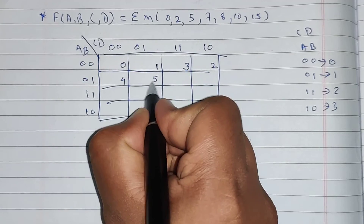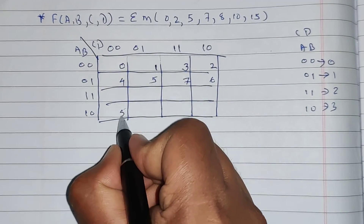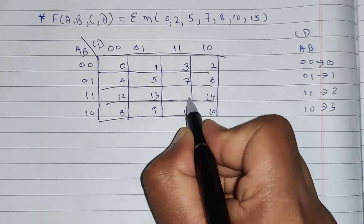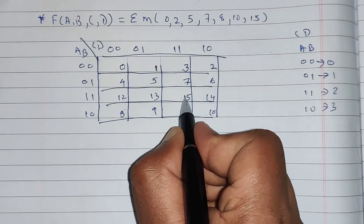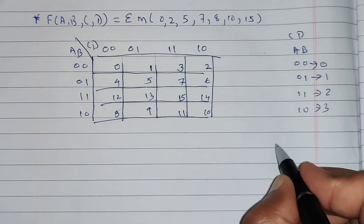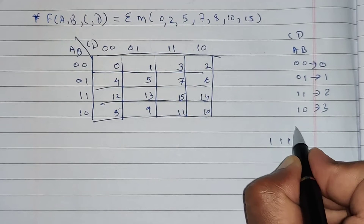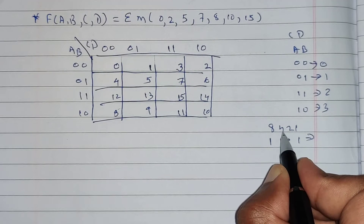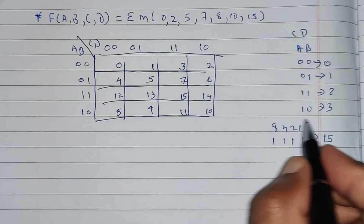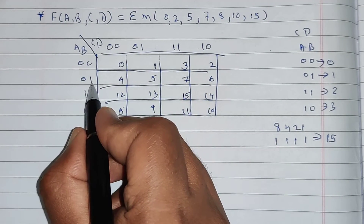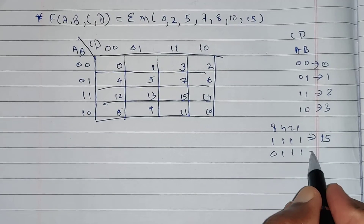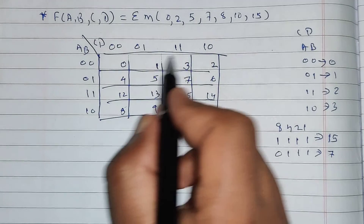Similarly, the remaining rows follow the pattern: 4, 5, 6, 7 then 8, 9, 10, 11 then 12, 13, 14, 15. You can verify any number. Why is this number 15? Because the code is 1111, and 1111 in decimal using the 1, 2, 4, 8 rule is 8+4+2+1 = 15. Similarly, 0111 gives 4+2+1 = 7. This is the standard pattern of the 4-variable K-map: 0,1,2,3, 4,5,6,7, 12,13,14,15, 8,9,10,11.